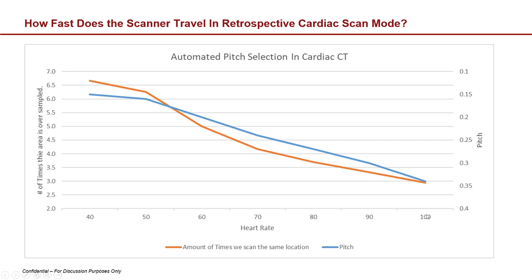Here's a graph depicting what happens with heart rate. At a heart rate of 40, we may use a pitch of 0.15, which corresponds to approximately six times we have to scan that location to get through the entire heart cycle. As heart rate increases to 100 BPM, the number of times we oversample decreases from six at 40 BPM to three at 100 BPM. So faster heart rates mean faster imaging in retrospective gating mode — it doesn't make images better, just faster.